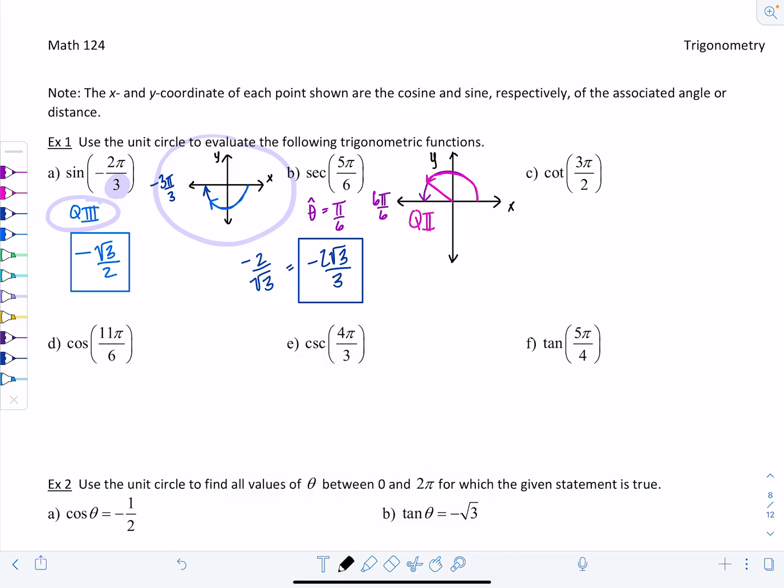Cotangent of 3 pi over 2. 3 pi over 2, x-axis, y-axis. Half a revolution is pi. Up here is 1 pi over 2. Count with me: 1 pi over 2, 2 pi over 2. Here's 3 pi over 2 down there. What are the coordinates of the unit circle down there? If you were to plot that point, what would its coordinates be? Yes, 0, negative 1. Cotangent is x divided by y. Cotangent of 3 pi over 2 is 0 over negative 1, which is 0.